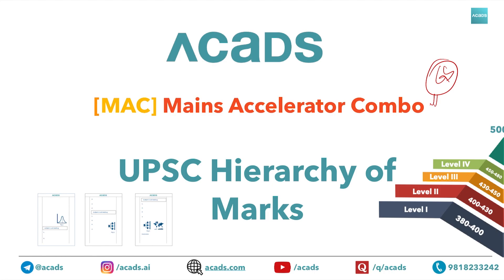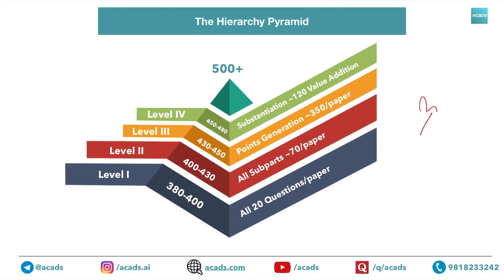So in GS alone, if you leave aside the essay paper, you can gain an edge of around 100 to 120 marks if you are doing things correctly. Without wasting any more time, let's start. In the UPSC hierarchy, number one priority — leave everything aside — is that you should be able to attempt 20 questions in three hours. Most people feel this is very basic, but around 70 to 80 percent of people are not able to complete their paper satisfactorily in three hours.